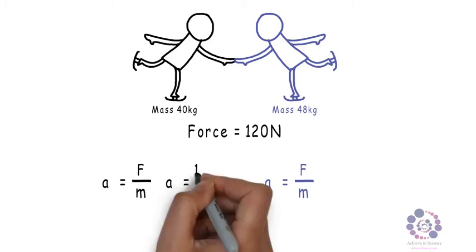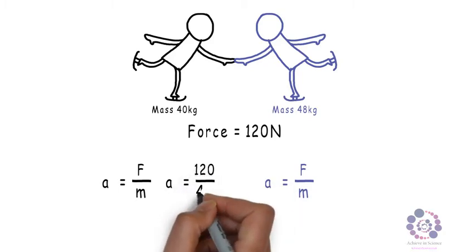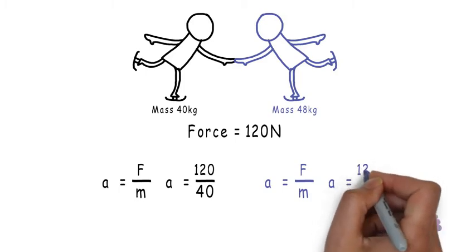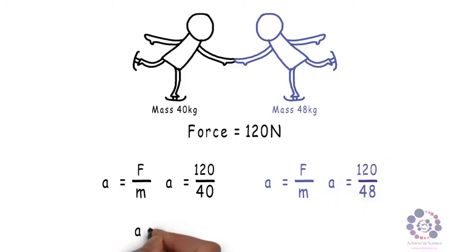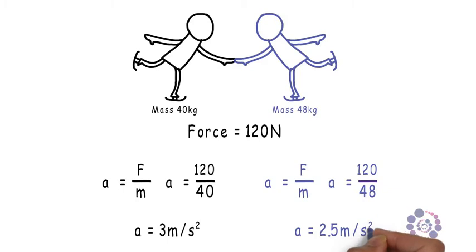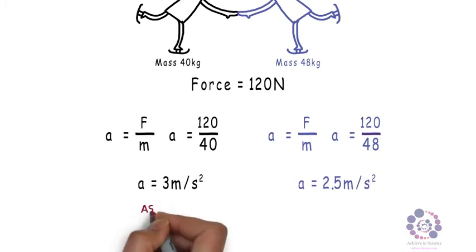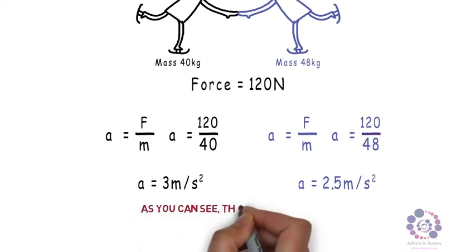So for the first one, we have 120 divided by 40. For the second one, 120 divided by 48. Therefore, for skater A, they will have an acceleration of 3 meters per second squared. Whereas the greater mass one will have an acceleration of 2.5 meters per second squared.